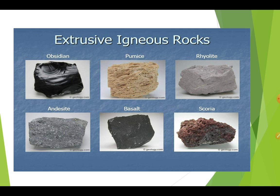I already explained you the formation of igneous rocks and types of igneous rocks. Let me summarize: the types of igneous rock are extrusive and intrusive igneous rock, how they are formed, and what are the examples of these rocks. This is all for today. In the next class, I am going to explain you about sedimentary rocks as well as metamorphic rocks and the formation of these two rocks. Thank you and have a nice day.